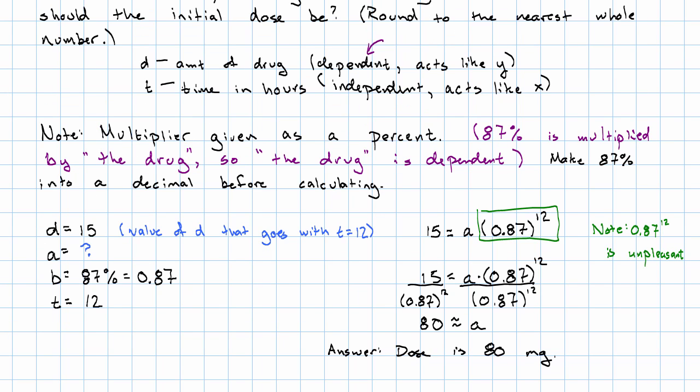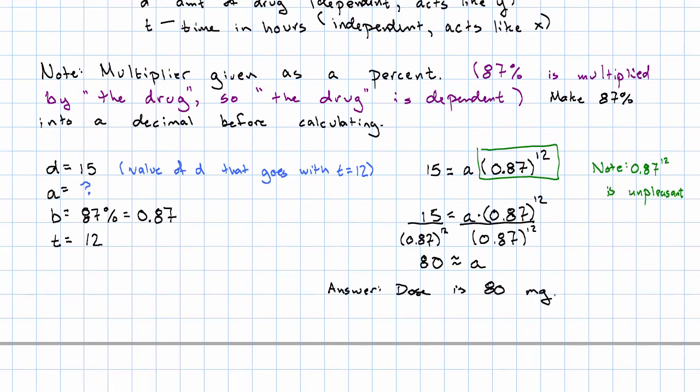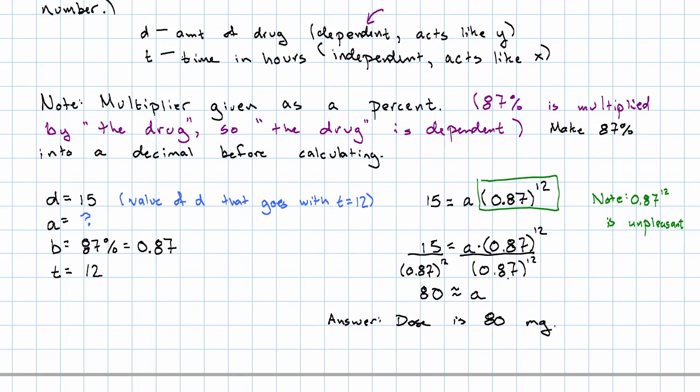When we want to find the final amount, it's really just a matter of plugging in and doing the arithmetic. When we want to find the starting amount, we need a little bit of algebra. But it's just dividing both sides by a number.